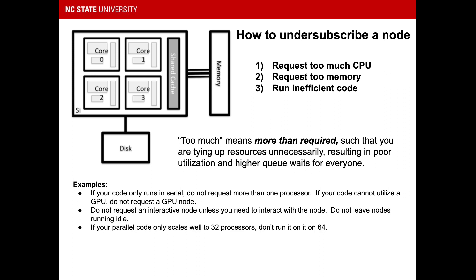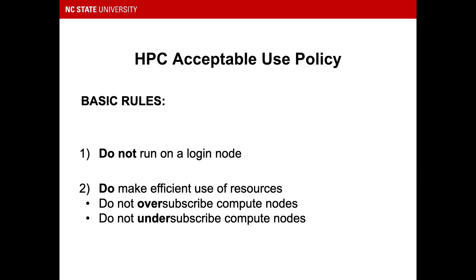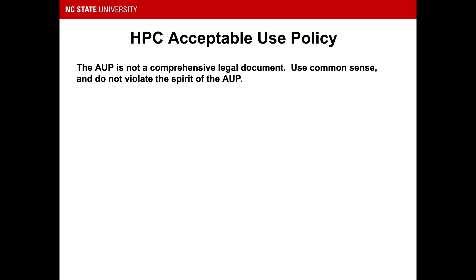Another consideration is about efficiency — for example, if your parallel code only scales well to 32 processors, don't run it on 64 processors. Besides the two basic rules, there is a third: use common sense. The AUP is not written in a way that is formal or comprehensive. Use common sense, and even in the case that something is not expressly forbidden, do not violate the spirit of the AUP.